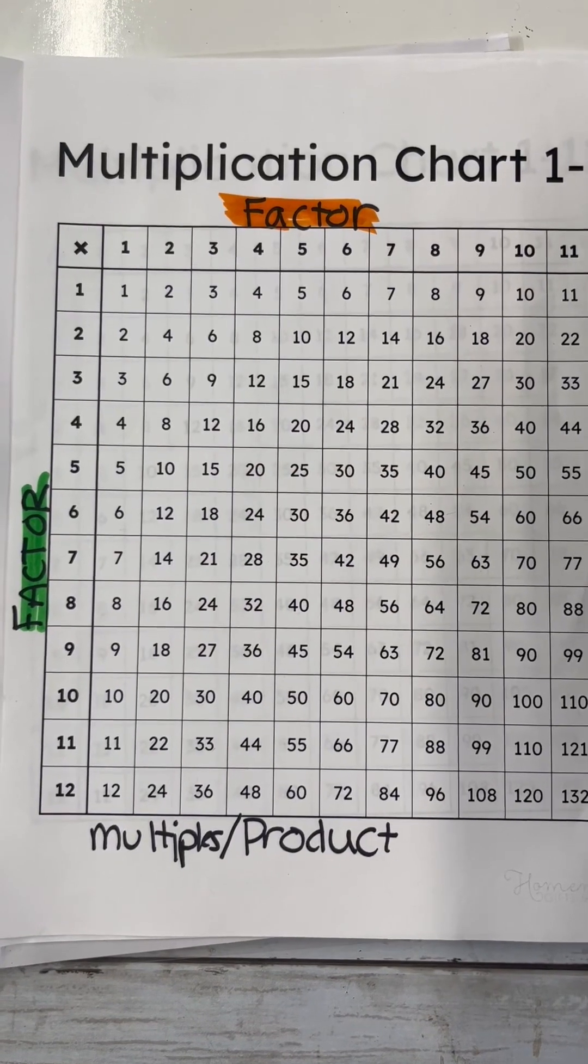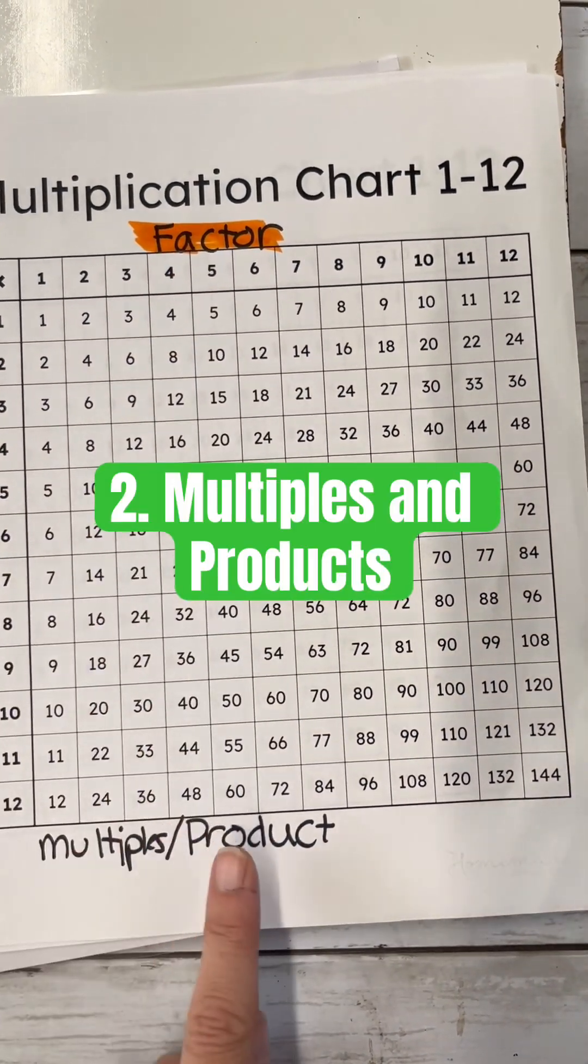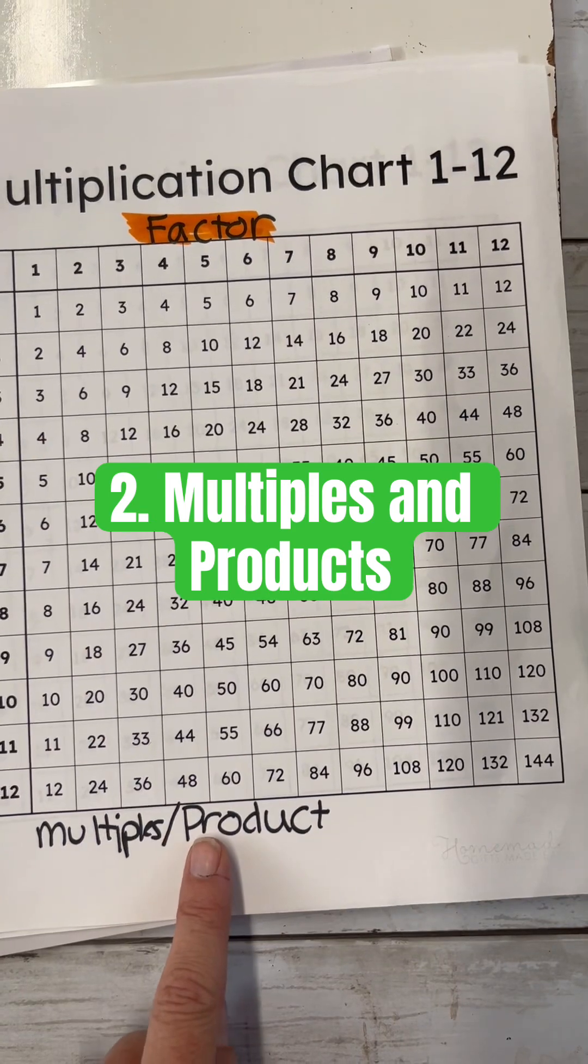Find the multiples and the product. On the left-hand side I have my factors, the top I have my factors, and the middle are my multiples and my products.